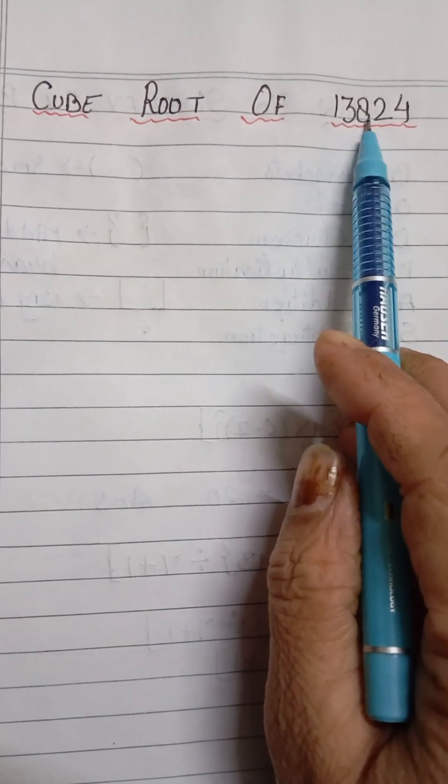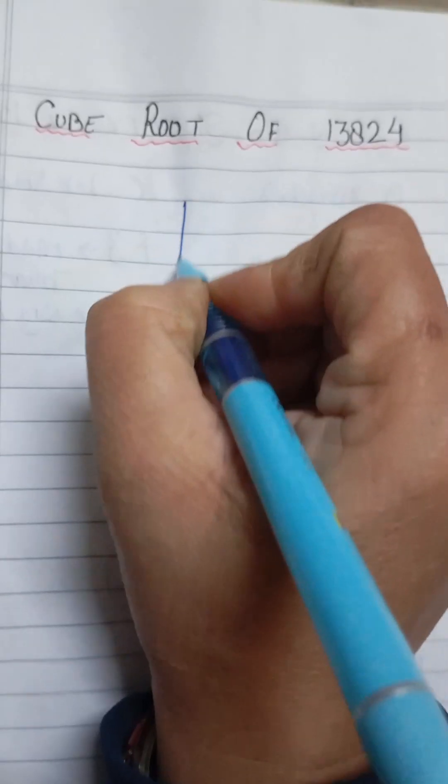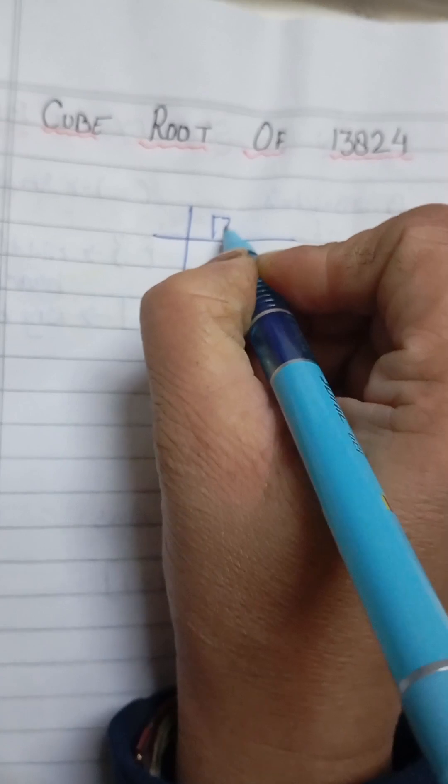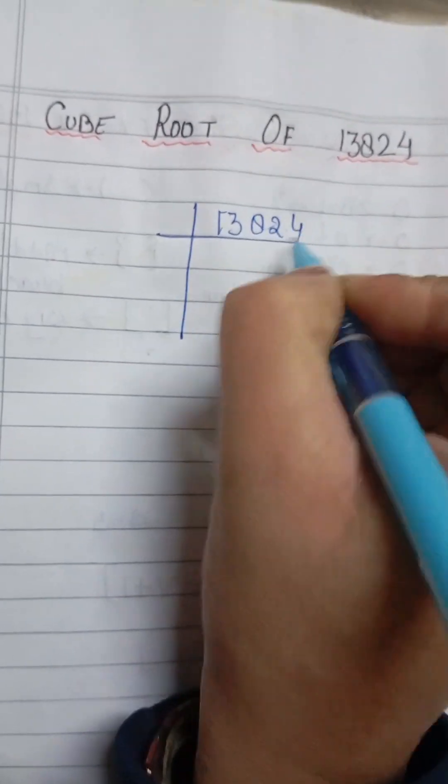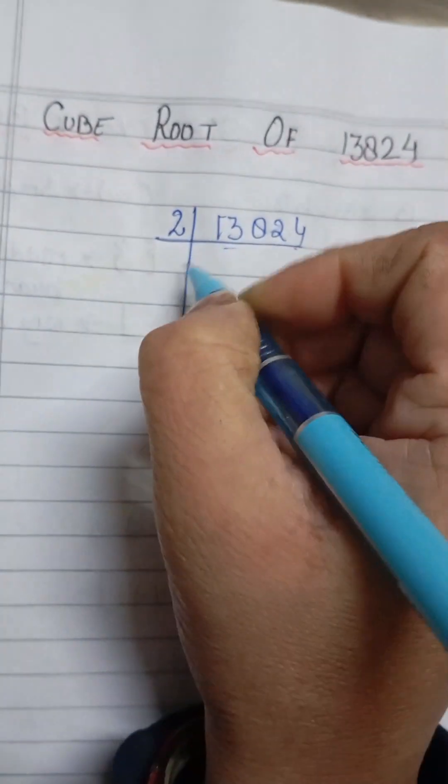Cube root of 13,824. We get the factor of 13,824. It is an even number, so it is divisible by 2.